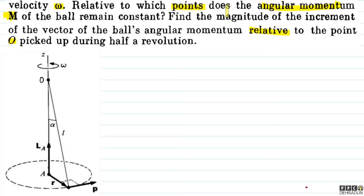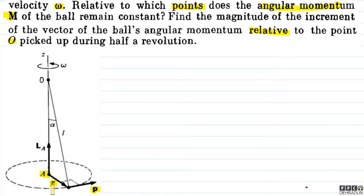We need to find the point about which the angular momentum remains constant. That point is the center of the horizontal circle — I've denoted it as point A. At any given moment, the position vector r and momentum vector p are as shown, and computing r cross p gives the angular momentum pointing upward. So the answer to part one is: relative to the center of the circle.